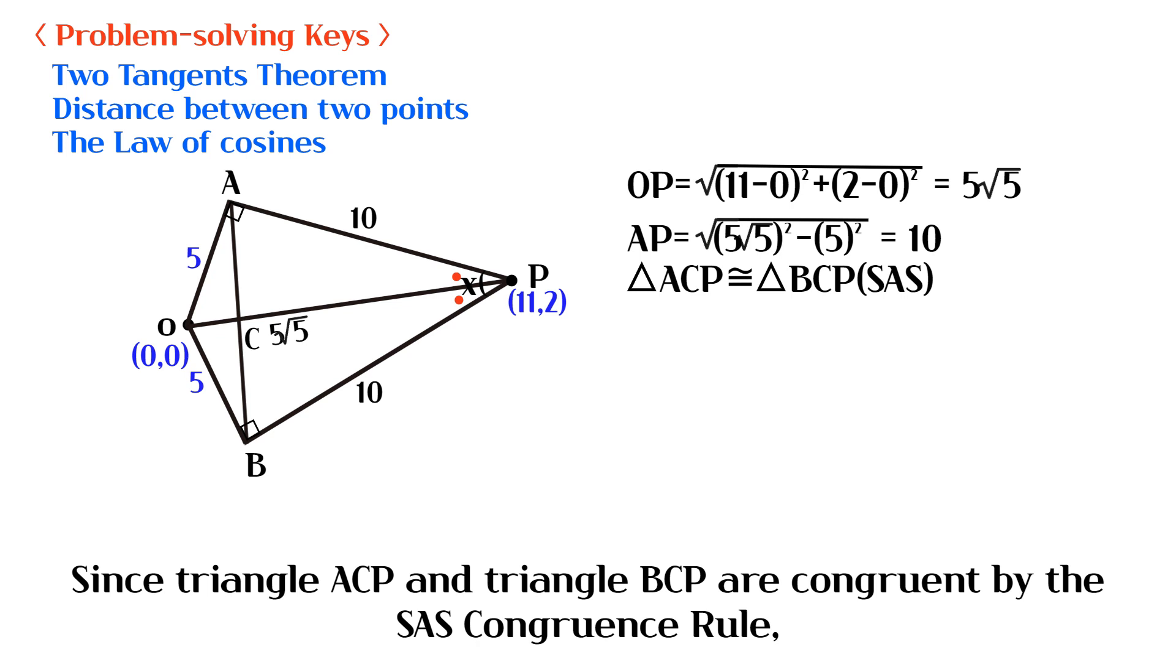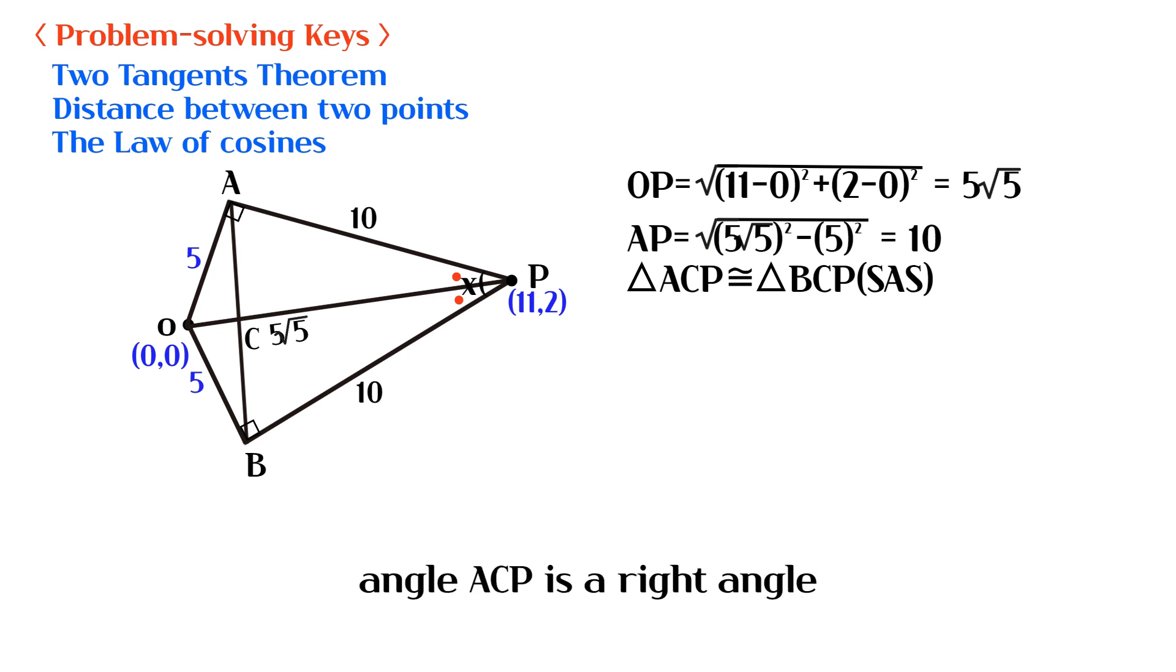Since triangle ACP and triangle BCP are congruent by the SAS congruence rule, angle ACP is a right angle.